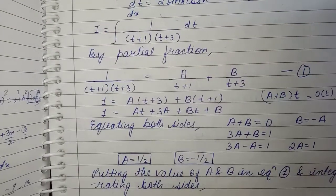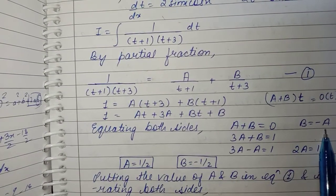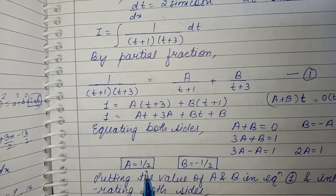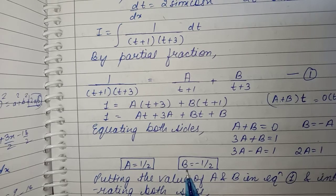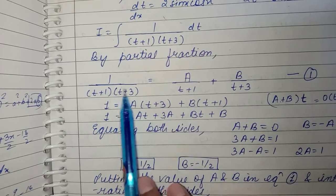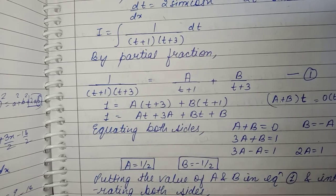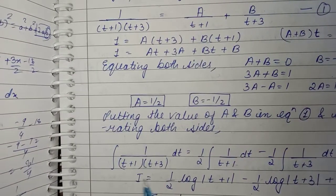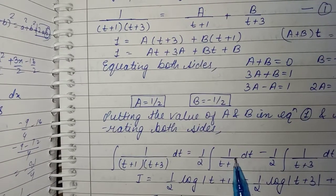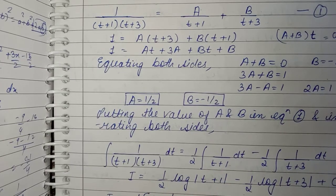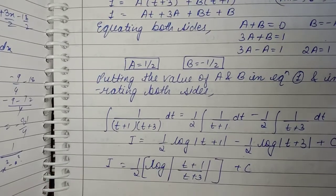Solving the equations: subtracting gives 2a = 1, so a = 1/2, and b = −1/2. Substituting back and integrating gives (1/2)·log|t+1| − (1/2)·log|t+3| + C.